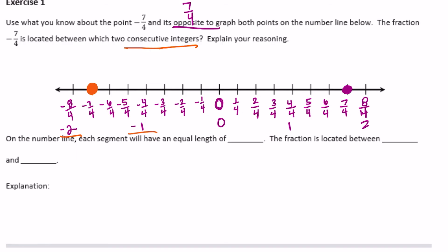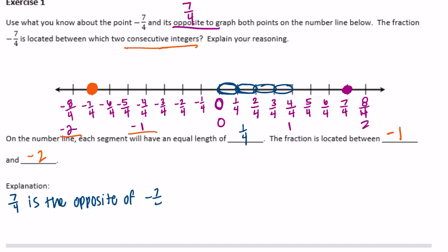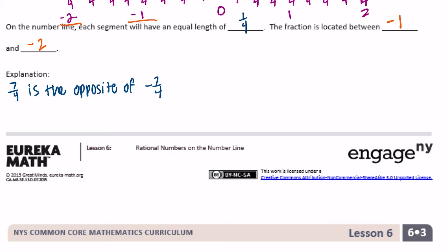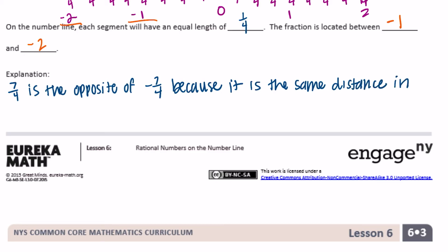The fraction is located between negative one and negative two, and each segment on the number line has an equal length of one fourth. For our explanation: seven fourths is the opposite of negative seven fourths because it is the same distance in the opposite direction from zero.